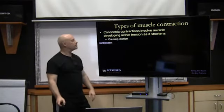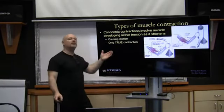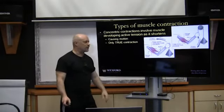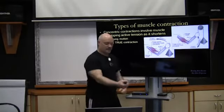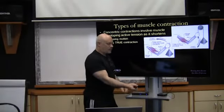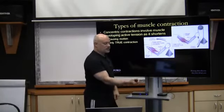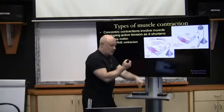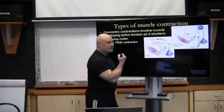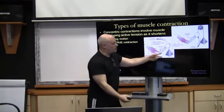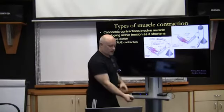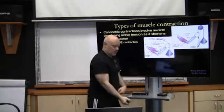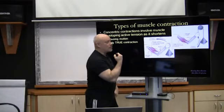Concentric causes motion, and it's the only true contraction — remember that. Once again, with a weight in our hand like a dumbbell, the weight wants to go down, so the muscle has to produce enough force to counteract that downward movement and go upward. The muscle is going to shorten to cause movement, pulling on the forearm in the opposite direction. The weight wants to go clockwise and we're counteracting that with a counterclockwise movement.